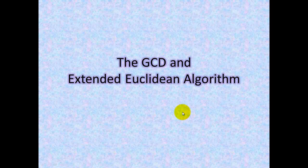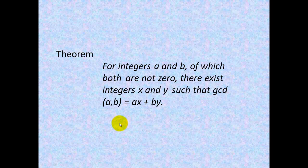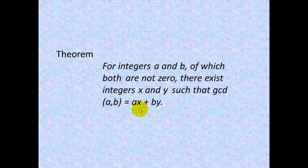In this video, I'm going to demonstrate how to find the greatest common divisor and the extended Euclidean algorithm. We're going to prove the theorem for integers A and B, of which both are not zero. There exist integers X and Y such that GCD(A,B) equals AX plus BY.